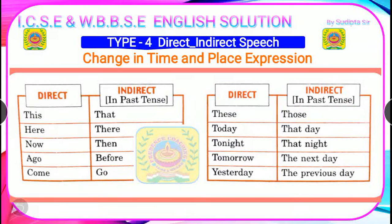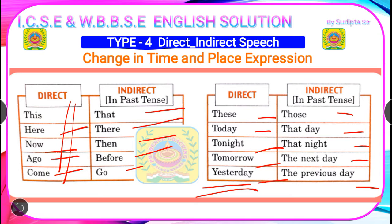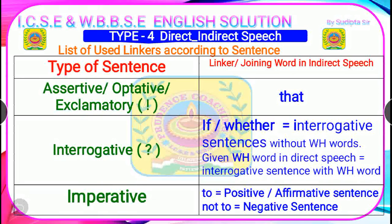You also need to know the change of time and place expressions. In direct speech → indirect speech: 'this' → 'that'; 'here' → 'there'; 'now' → 'then'; 'ago' → 'before'; 'come' → 'go'; 'these' → 'those'; 'today' → 'that day'; 'tonight' → 'that night'; 'tomorrow' → 'the next day'; 'yesterday' → 'the previous day.' So if you find 'yesterday' in direct speech, while writing indirect speech you write 'the previous day.'